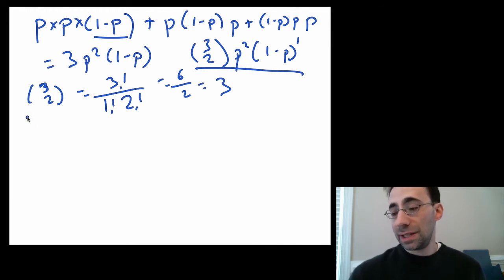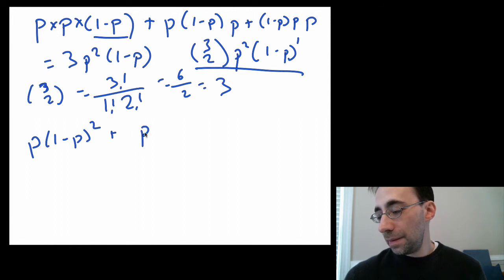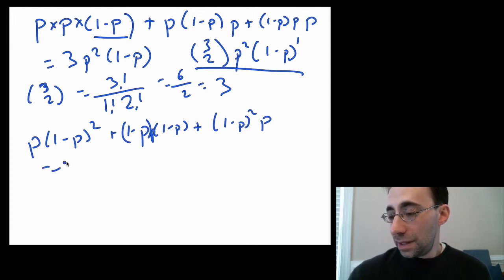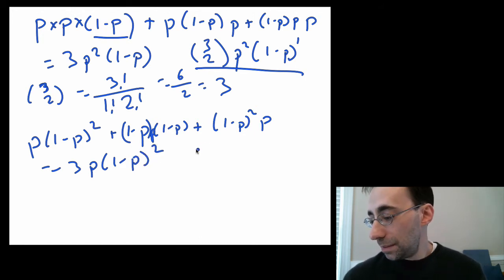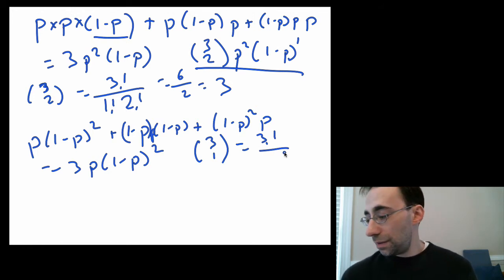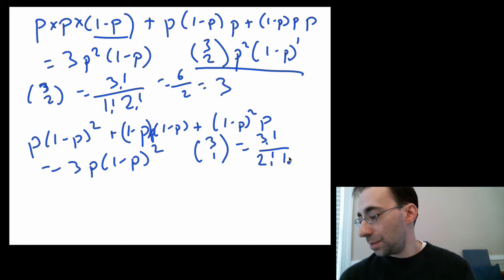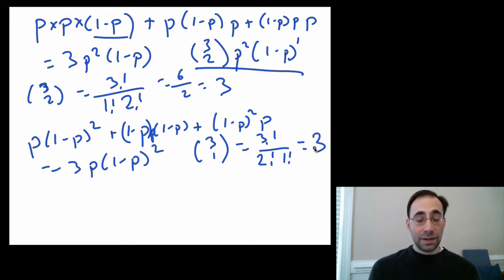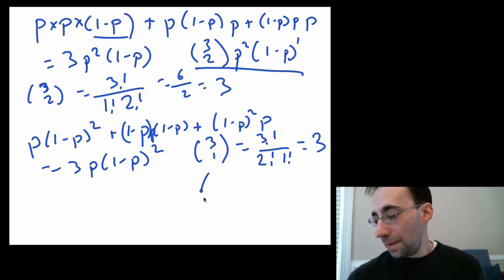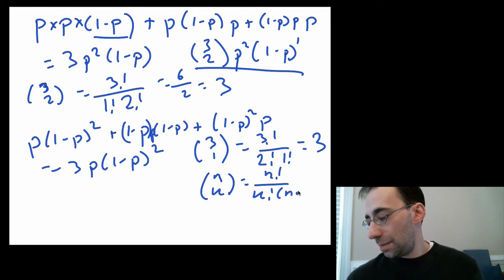3 with 1 positive is very similar. Except now you have 1 minus p times 1 minus p times p. This equals 3 times p times 1 minus p squared. And again, you can do the combinatorics out front: 3 choose 1 equals 3 factorial over 2 factorial times 1 factorial. And again, that's equal to 3.